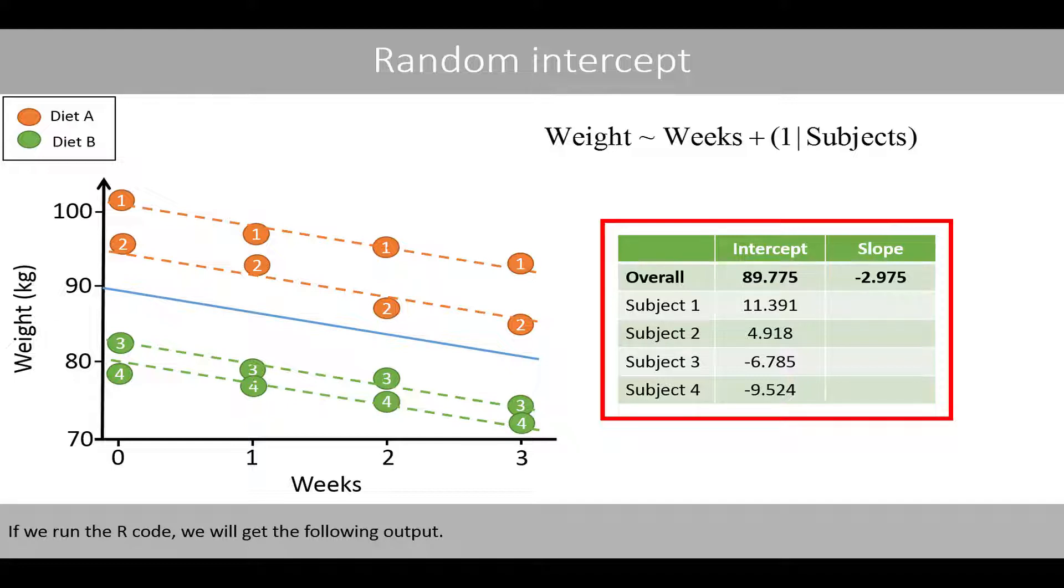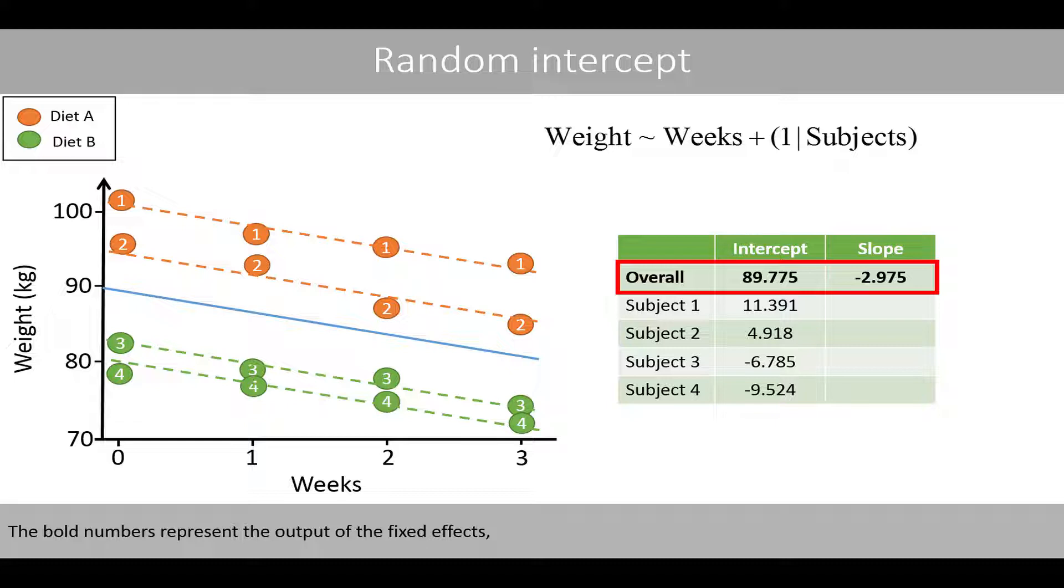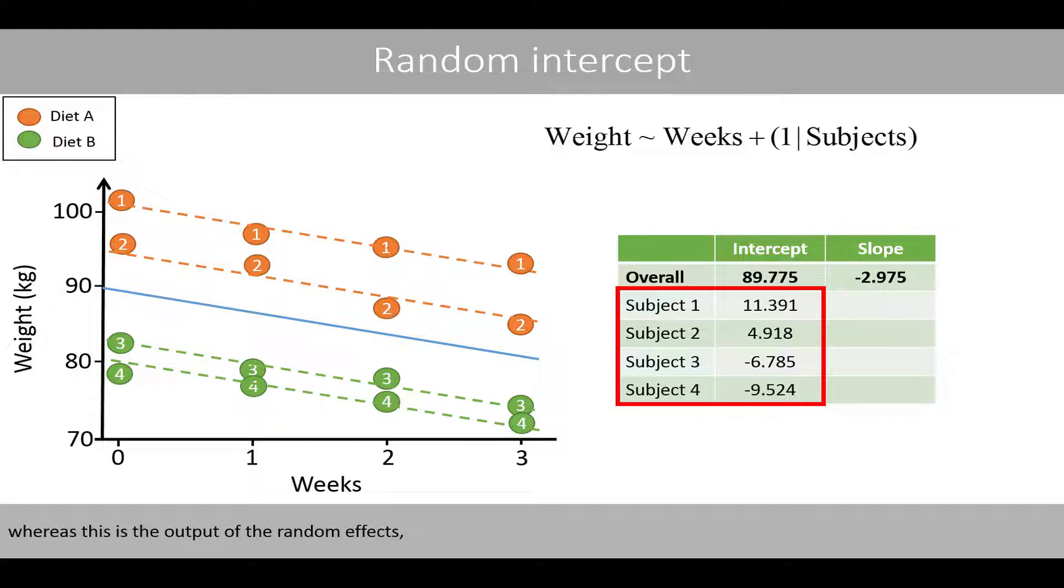If we run the R-code, we can extract the following values from the output. The bold numbers represent the output of the fixed effects, whereas this is the output of the random effects.